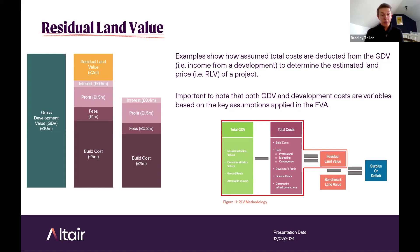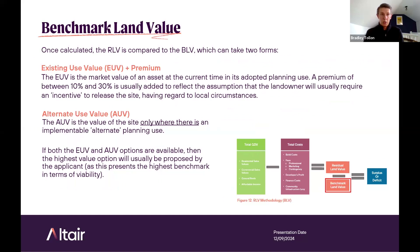In a scenario where the costs decrease to £6.7 million and the GDV stays the same, the residual land value increases. Because costs are £6.7 million, the residual land value — the difference between that and the GDV — is therefore £3.3 million. However, the residual land value is not considered in isolation; it will only be considered viable if it exceeds the benchmark land value of the site.